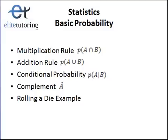Welcome back. This is Part 2 of Basic Probability. Again, I'm covering multiplication rule, addition rule, conditional probability, the complement of an event, and all using the rolling of a die as our example.